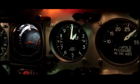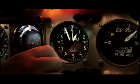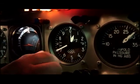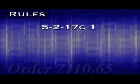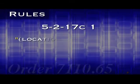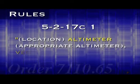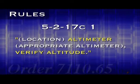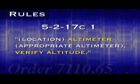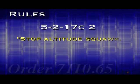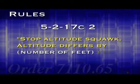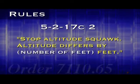One reason an altitude readout might be invalid is that the pilot may have the incorrect setting on his or her altimeter. If there is a discrepancy between the Mode C and pilot reported altitude, the 7110 requires that you have the pilot make sure the correct altimeter is entered by saying: the location of the reporting station, such as Academy, altimeter, and then the appropriate altimeter setting, verify altitude. If this does not resolve the discrepancy, you must have the pilot turn off their Mode C altitude reporting by saying, "Stop altitude squawk, altitude differs by" and then the number of feet.